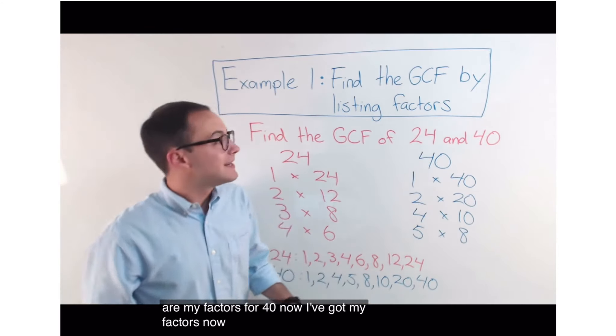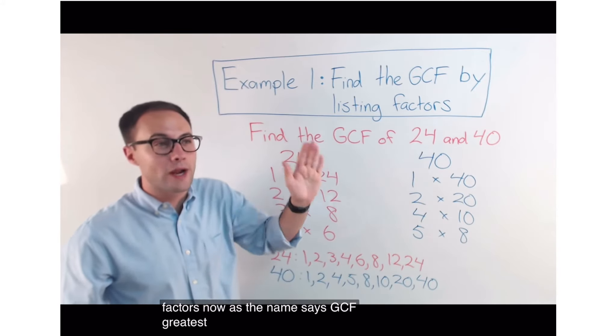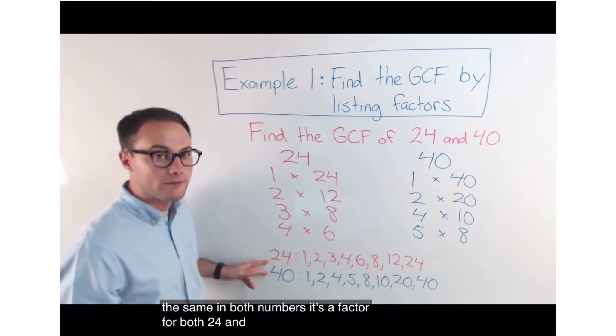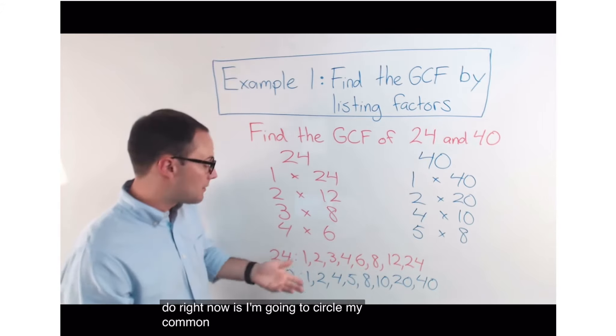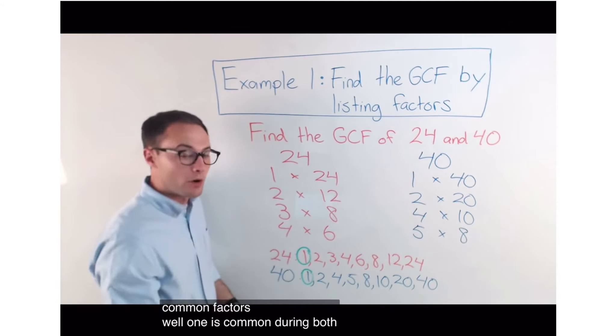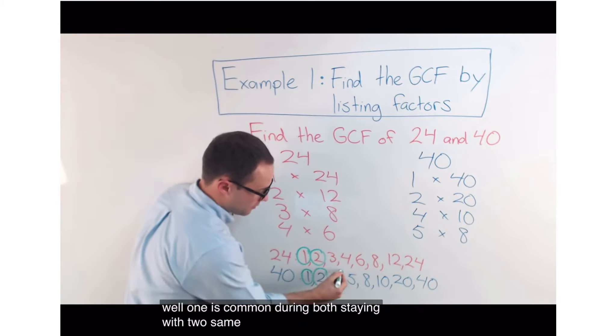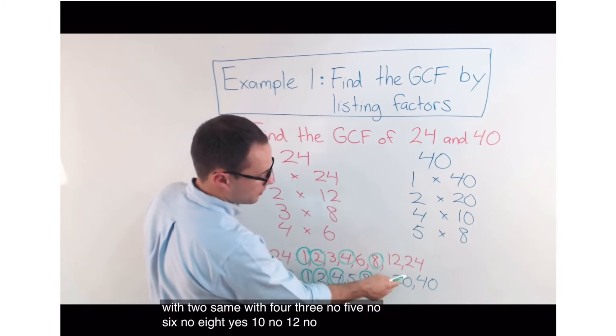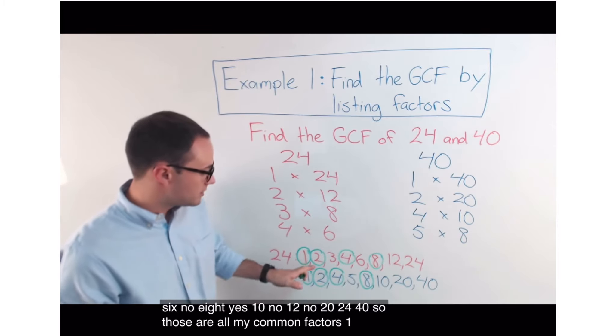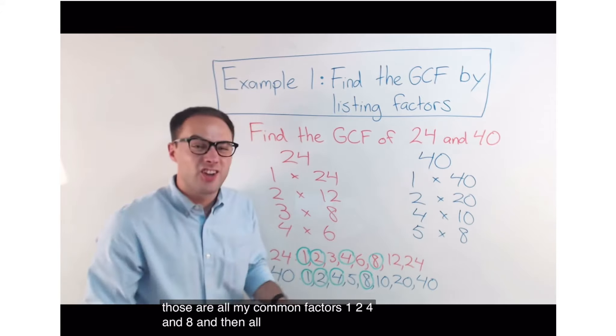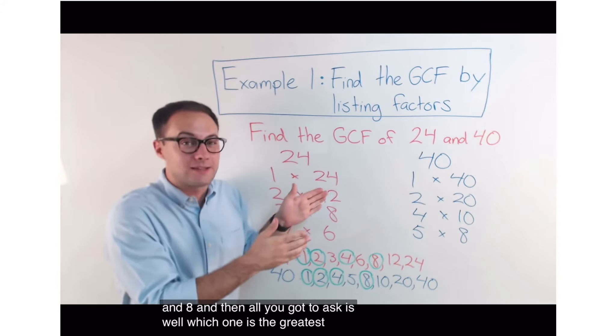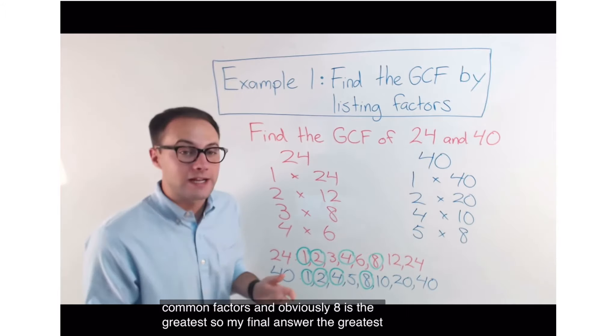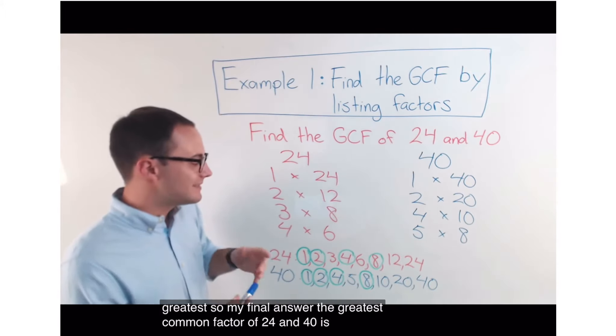Now, I've got my factors. Now, as the name says, GCF greatest common factor. Common means it's the same in both numbers. It's a factor for both 24 and 40. So, what I'm going to do right now is I'm going to circle my common factors. Well, 1 is common. They're in both. Same with 2. Same with 4. 3, no. 5, no. 6, no. 8, yes. 10, no. 12, no. 20, 24, 40. So, those are all my common factors. 1, 2, 4, and 8. And then all you've got to ask is, well, which one is the greatest of the common factors? And, obviously, 8 is the greatest. So, my final answer, the greatest common factor of 24 and 40 is 8.